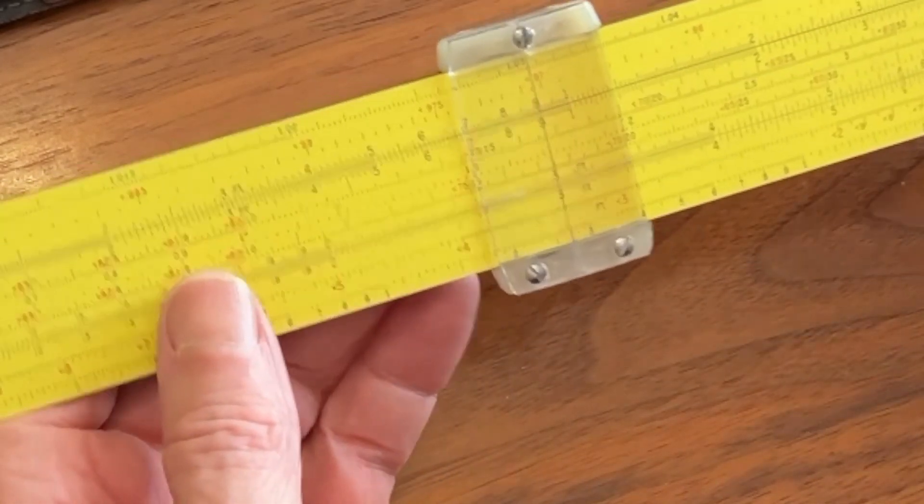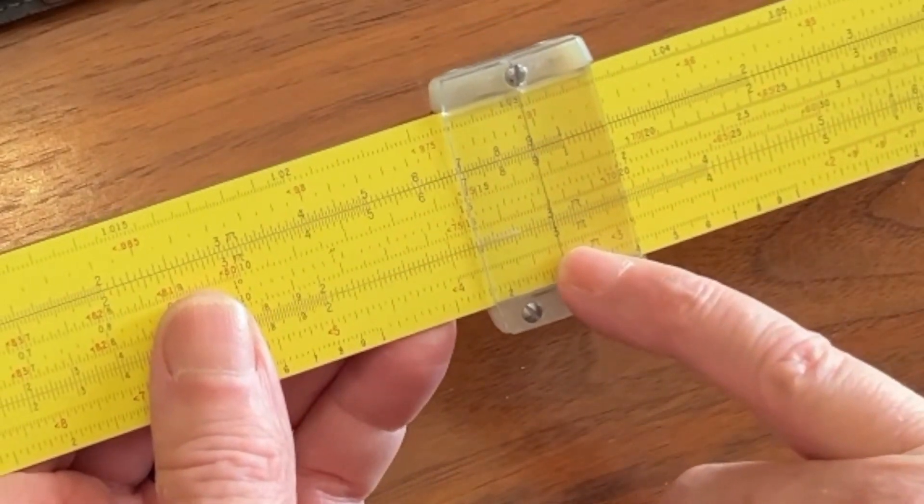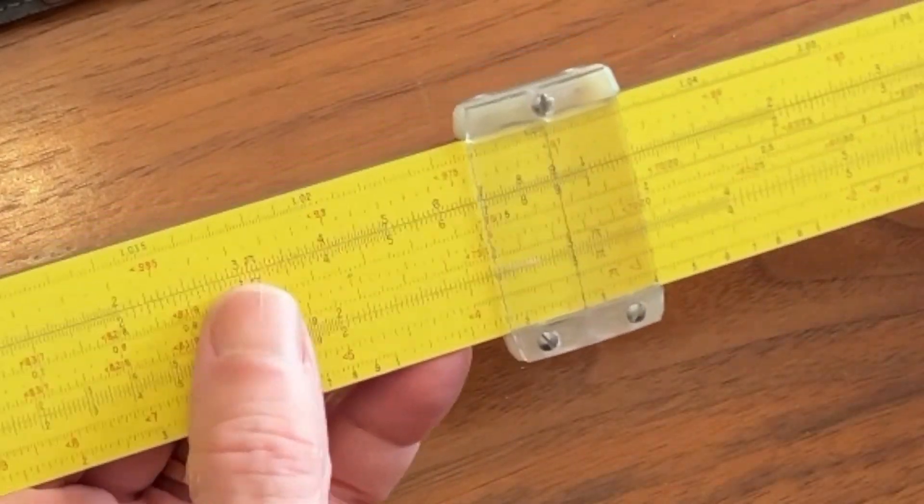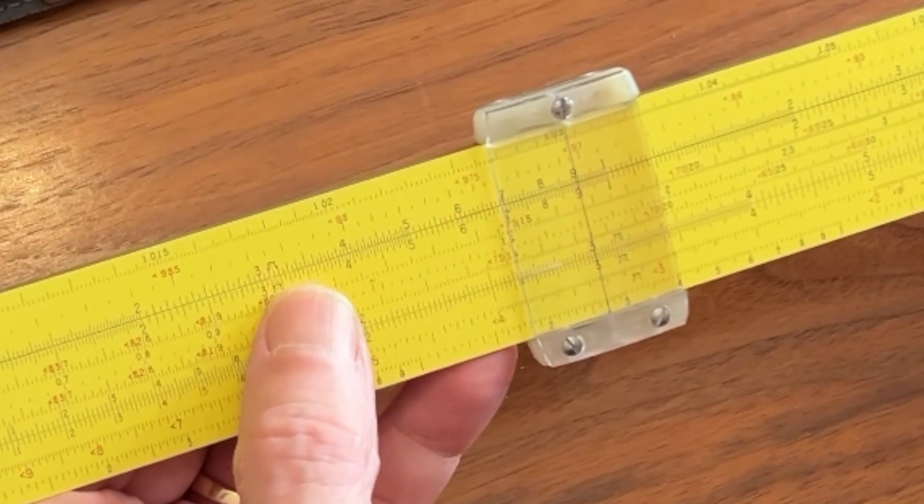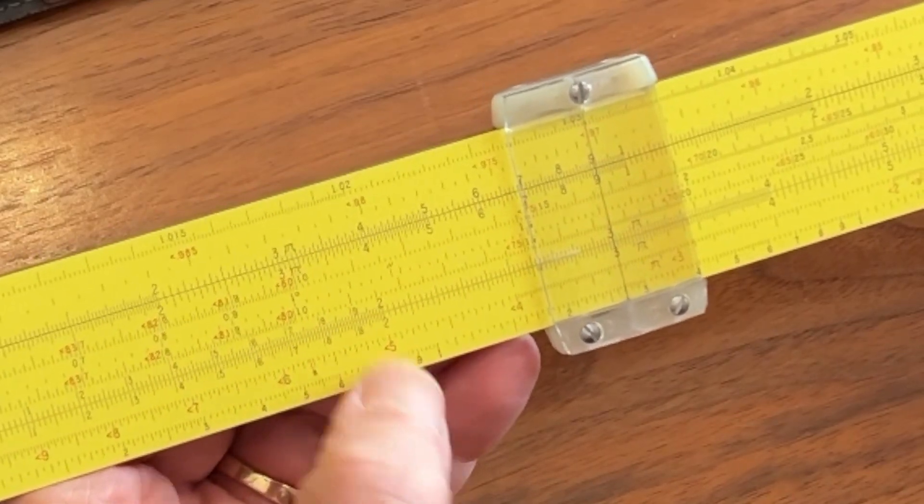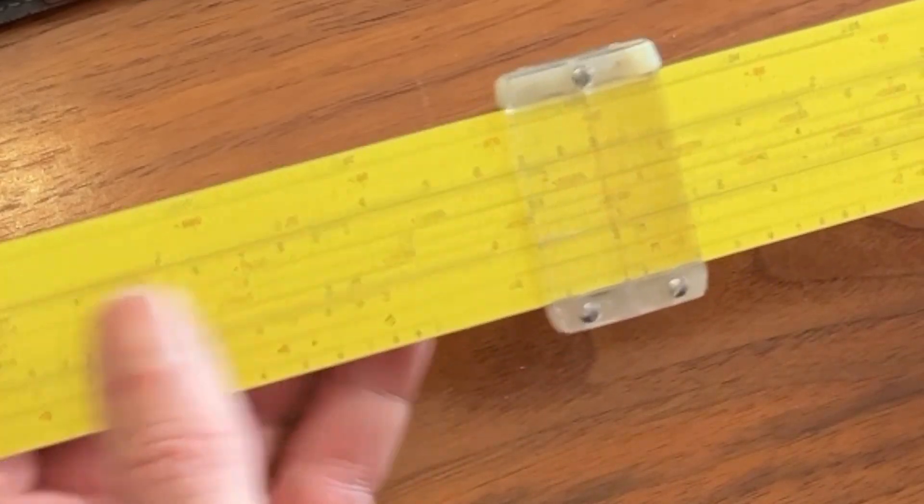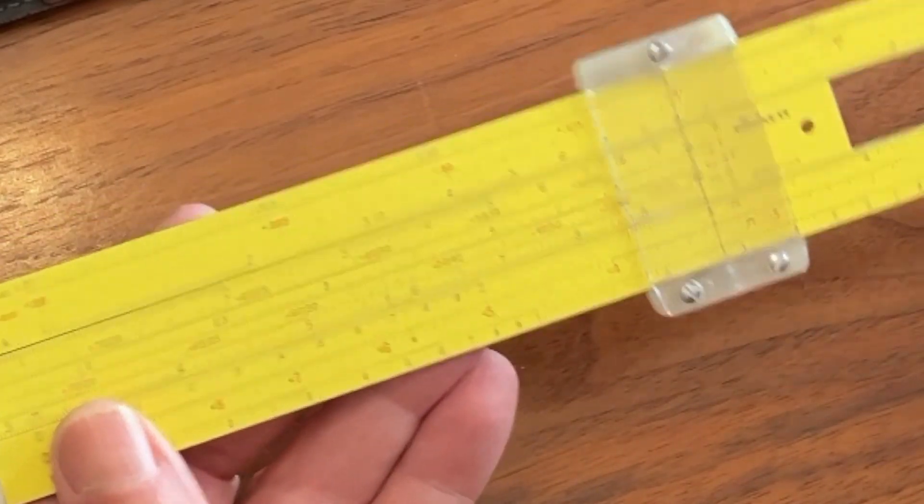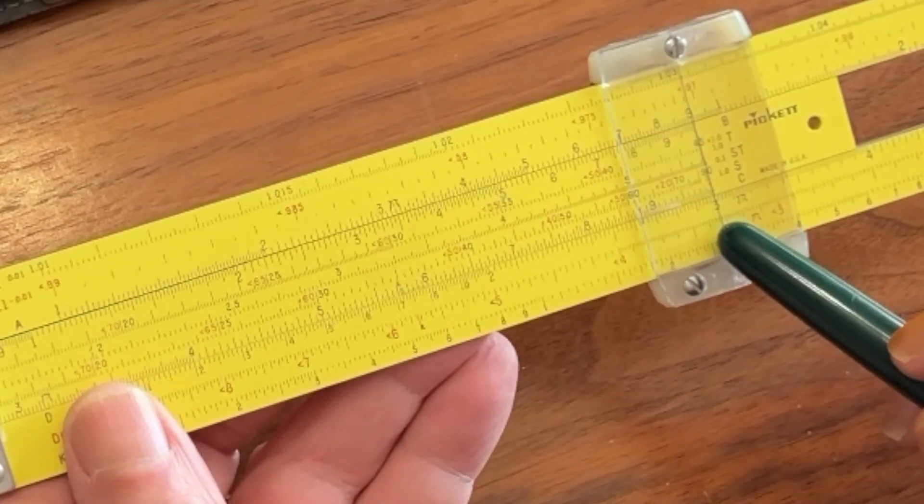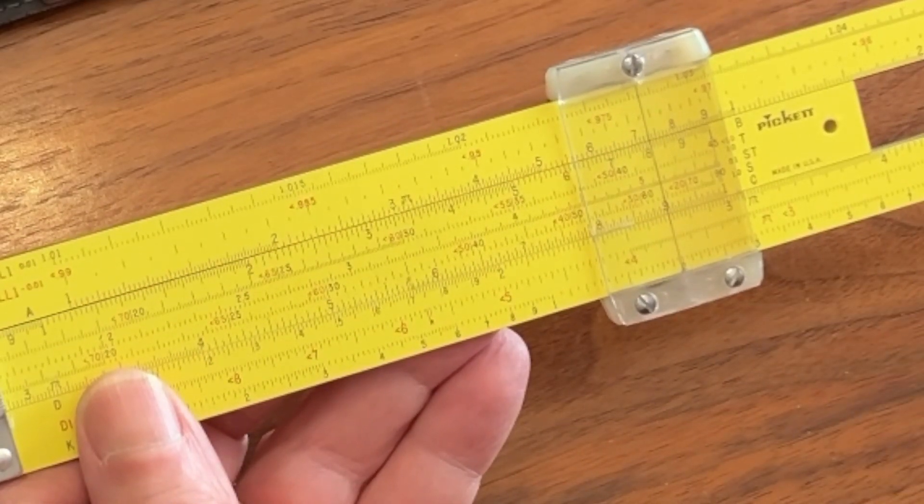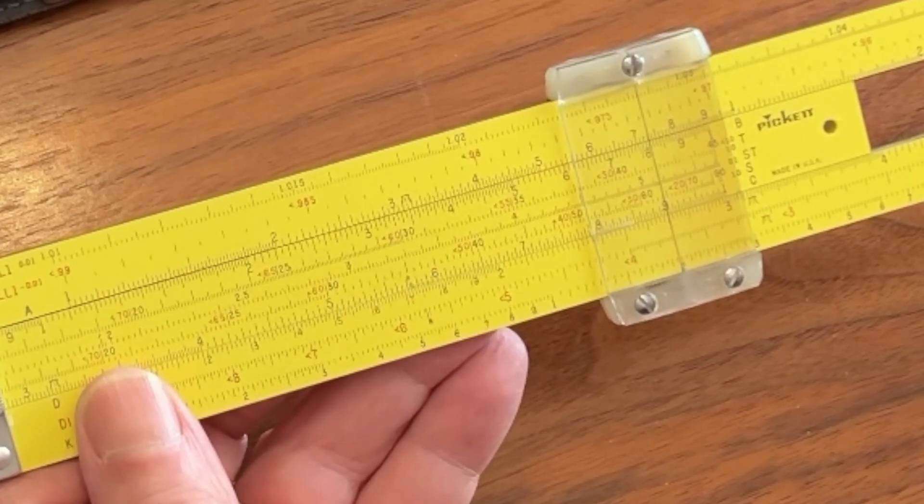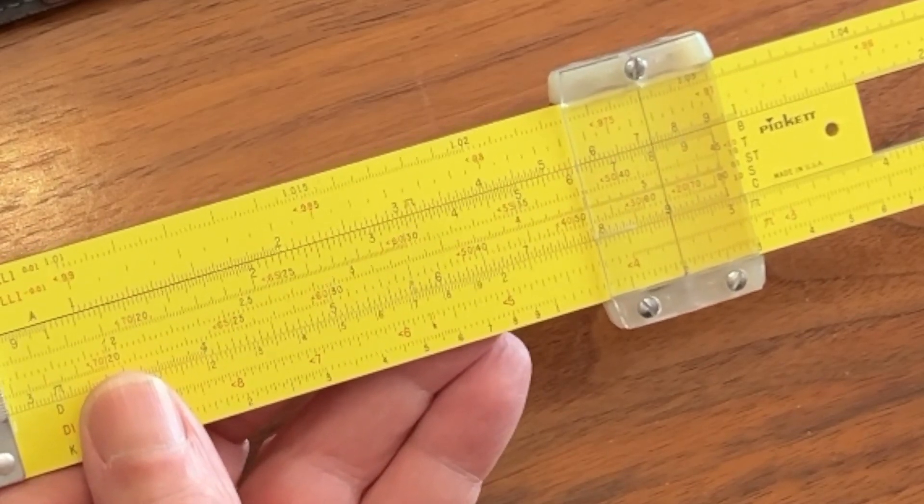So basically all we're going to do is multiply 3 by whatever number is above it on the AB scale to transfer the number on the K scale to the CD scale. So we can come right here, put the index of the C scale directly over 3, then we read out to 9, which multiplies 3 by 9, and we get 27 transferred down to the D scale where we want it.